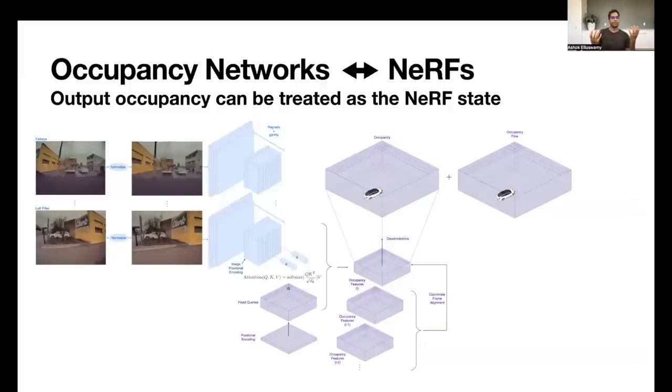Zooming out a bit, the team thinks of occupancy networks as an extension to neural radiance fields. As many of you know, neural radiance fields have taken over computer vision research to a large extent over the last couple of years. There's a lot of interesting work happening in this field. And this bodes really well for us because in our mind, this is the same approach. Neural radiance fields try to reconstruct the scene from multi-view images, essentially.